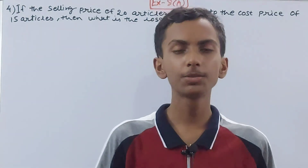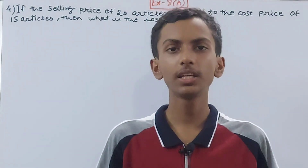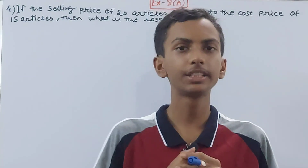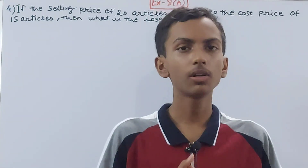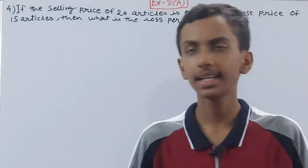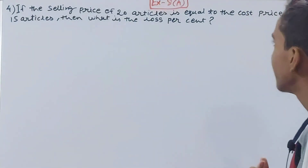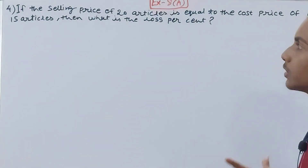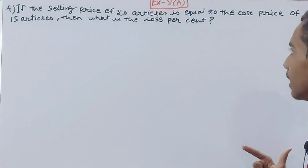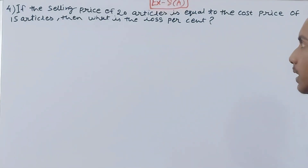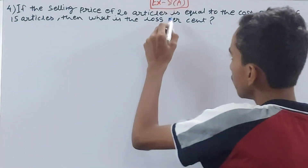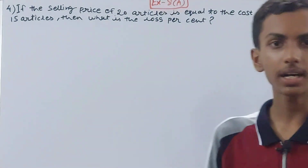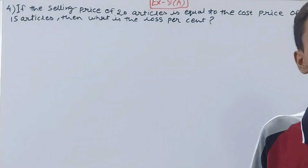Hello friends, welcome back to my YouTube channel 'Lock Your Learning'. In this video we are going to solve ICSE Mathematics Class 8, Chapter 8 - Profit, Loss and Discount, Exercise 8A, Question 4. If the selling price of 20 articles is equal to the cost price of 15 articles, then what is the loss percent? So it says that selling price of 20 articles is equal to the cost price of 15 articles.